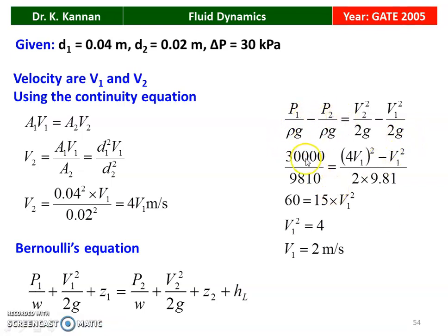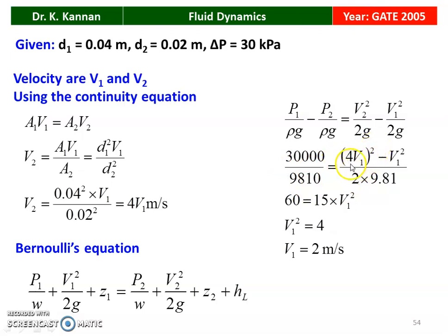Substituting ΔP = 30,000 Pa: 30,000/9,810 = ((4V₁)² − V₁²)/(2 × 9.81). Here 2 × 9.81 is taken to the left side, giving 30,000/1,000 = 60. So 15V₁² = 60, therefore V₁² = 4 and V₁ = 2 meters per second. The flow velocity is 2 meters per second.